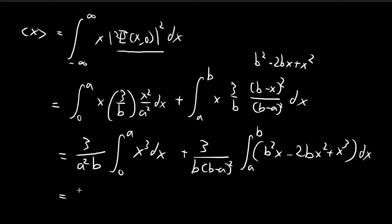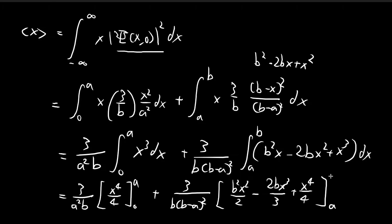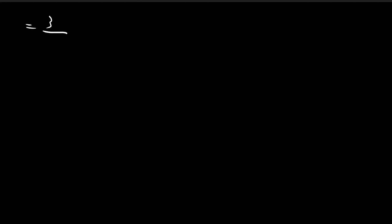Now we're ready to integrate both terms. For the first integral, we get x to the power of 4 divided by 4, evaluated from 0 to a. Substituting in a, we get a to the power of 4 divided by 4. The a squared in the constant cancels with part of this, so we get a squared remaining.